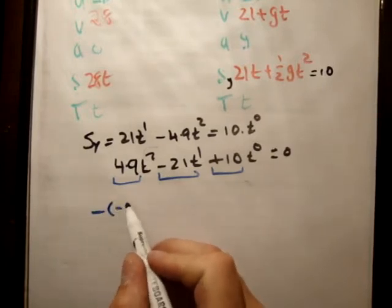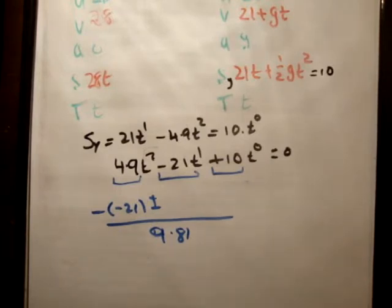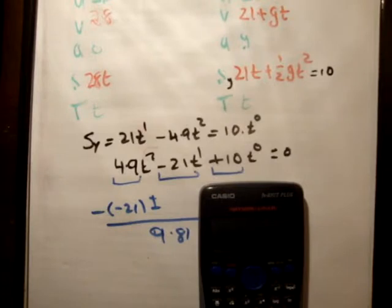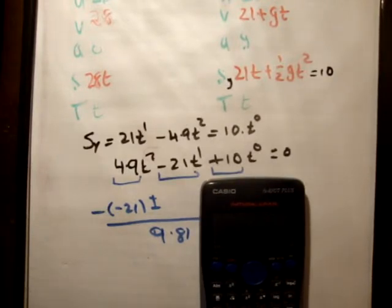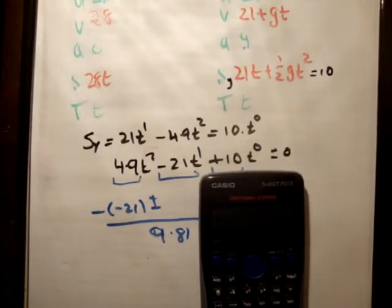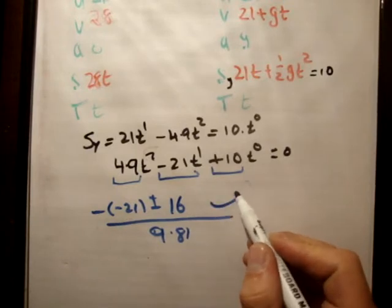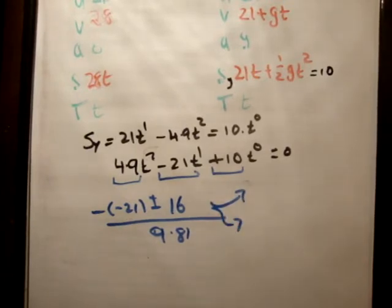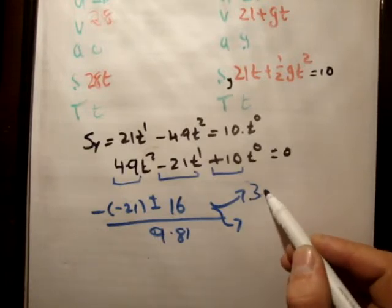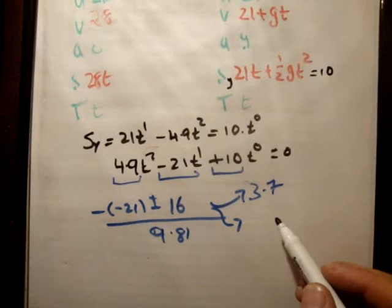So we get minus times minus 21 plus or minus something over 2 times 4.9 which is 9.81. So I'm going to do that square root. It's b squared which is minus 21 squared minus 4 times 4.9 times plus 10. That gives us a positive number which we square root and get an answer of 15.65. So I'm just going to call that 16. So this is going to give us two positive numbers. So the first one is going to be 21 plus 16, next is 21 minus 16 over 9.8.